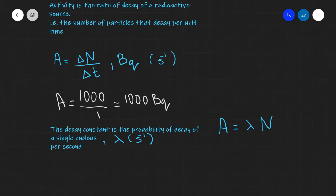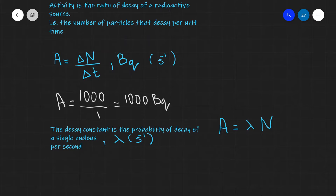The other really important quantity in our study of radioactivity is the decay constant — that is the probability of decay of a single nucleus per second. The unit for that is normally seconds to the power of minus one. However, in certain situations, for instance radioactive carbon dating, you may use years to the power of minus one or hours to the power of minus one, depending on the problem. As long as we are consistent with the units within our question, this should not cause any issues.